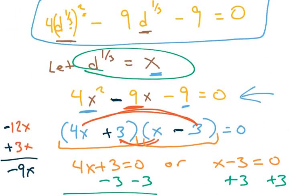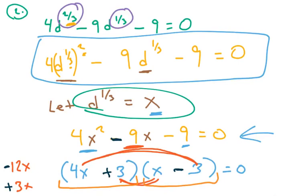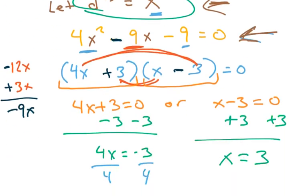Again, how did we go about solving the problem? The slick move in the very beginning is to realize that we can rewrite d to the 2/3 as d to the 1/3 raised to the 2nd power, which allows me to say d to the 1/3 is another variable x, which allows me now to have a very simple equation that I can factor out.